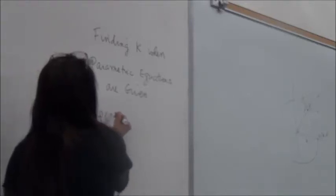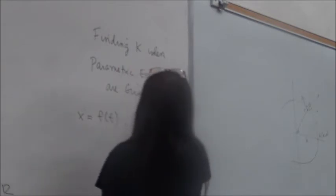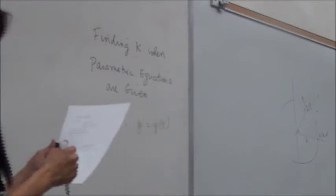The geometric equations are given, usually in terms of t. You have x equals f of t, y equals g of t, and you assume that the derivative exists up to the second derivative, so there will be the dominant ones.